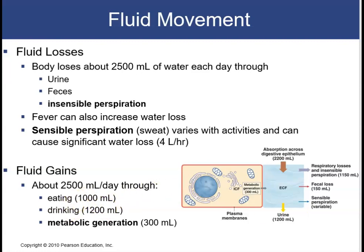For fluid gains: if we lose 2,500 milliliters, we must gain 2,500 milliliters throughout the day. The main sources of water are through eating and drinking. We also gain small amounts of water through metabolic activities — specifically the water generated at the end of the electron transport system.